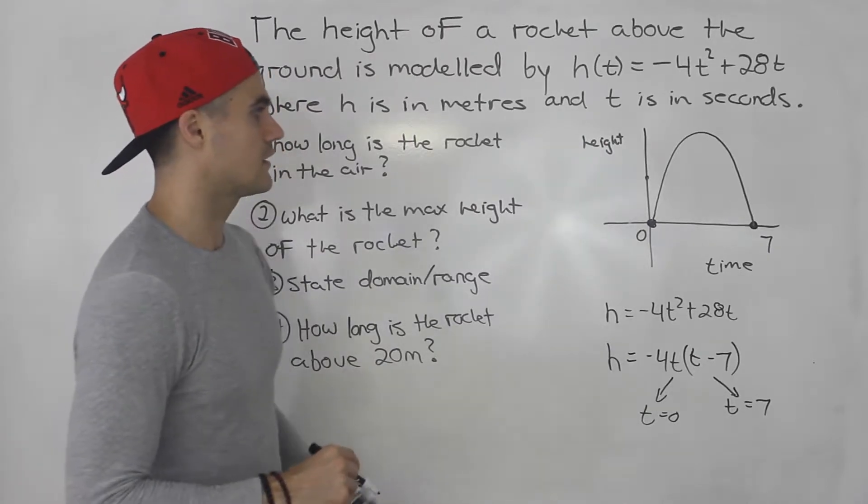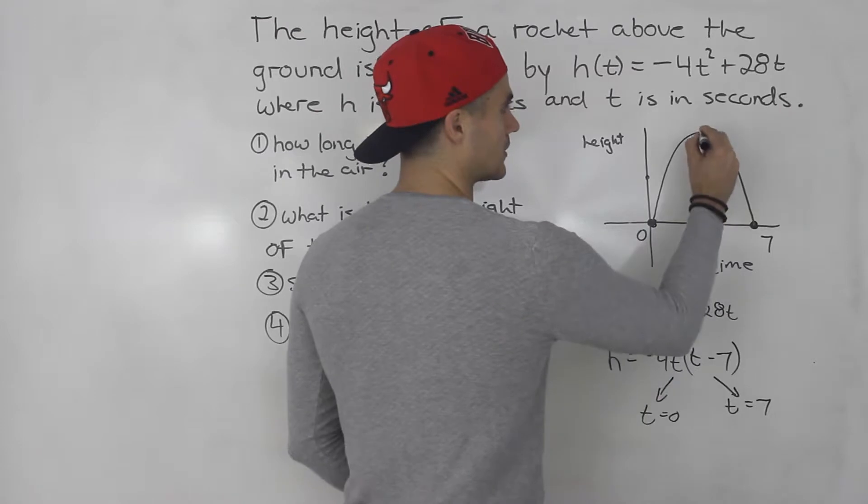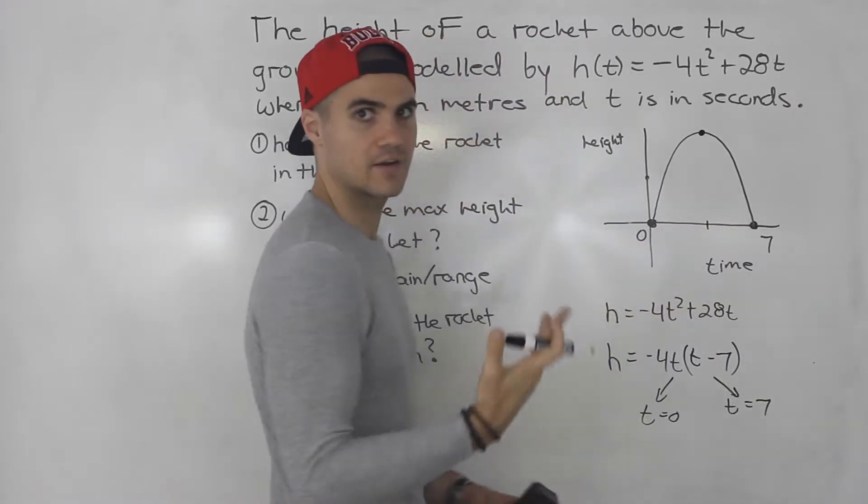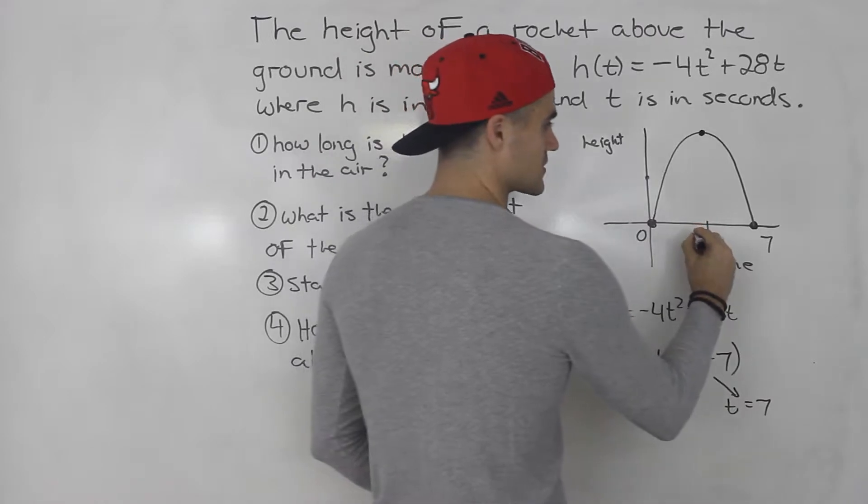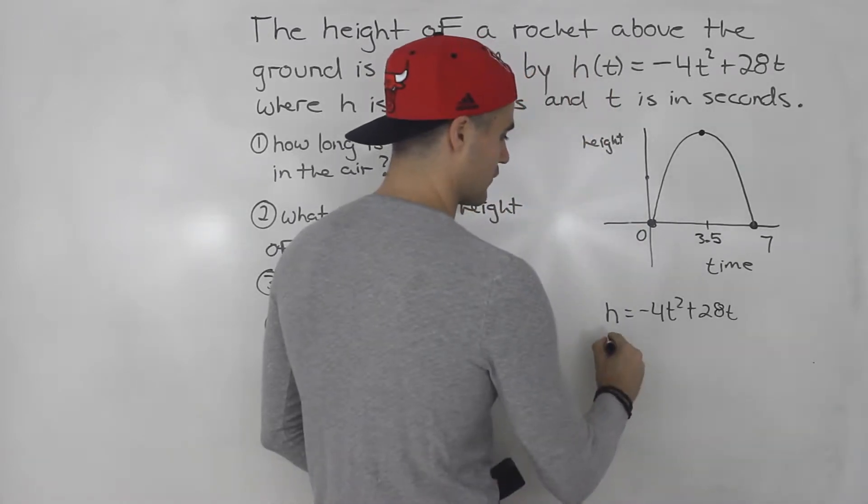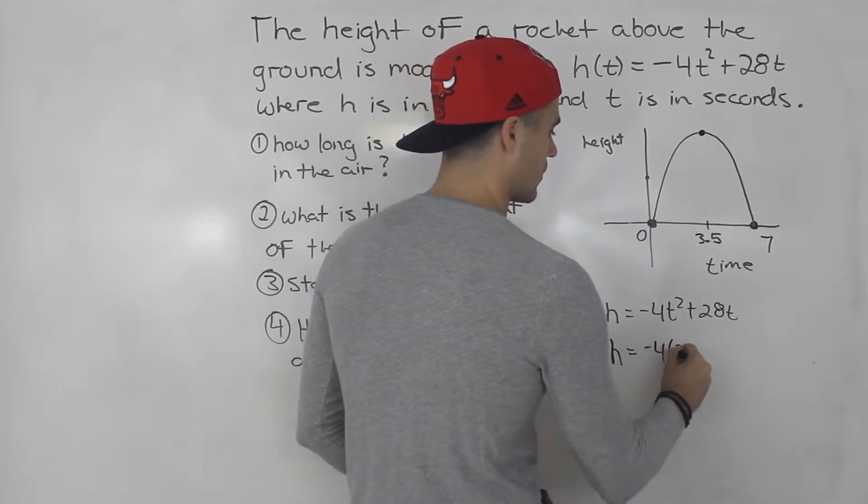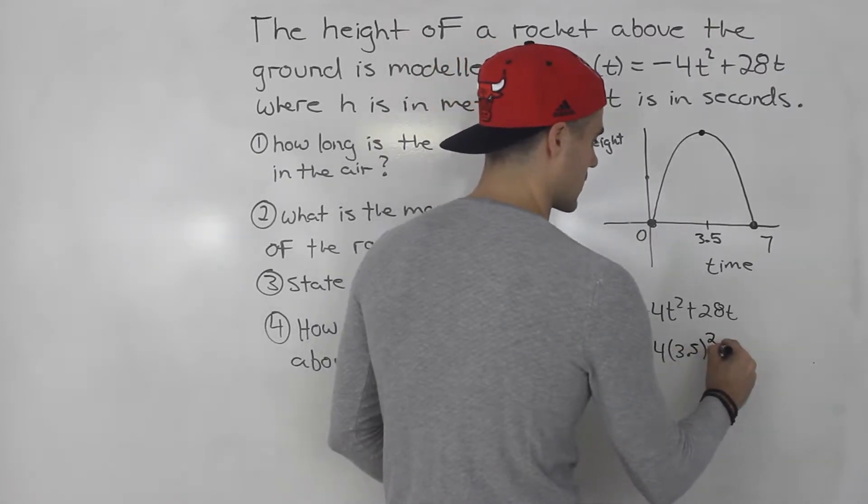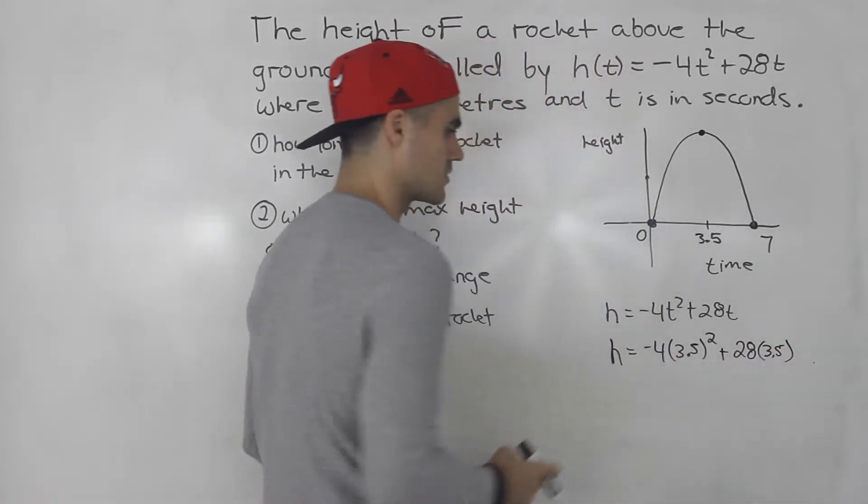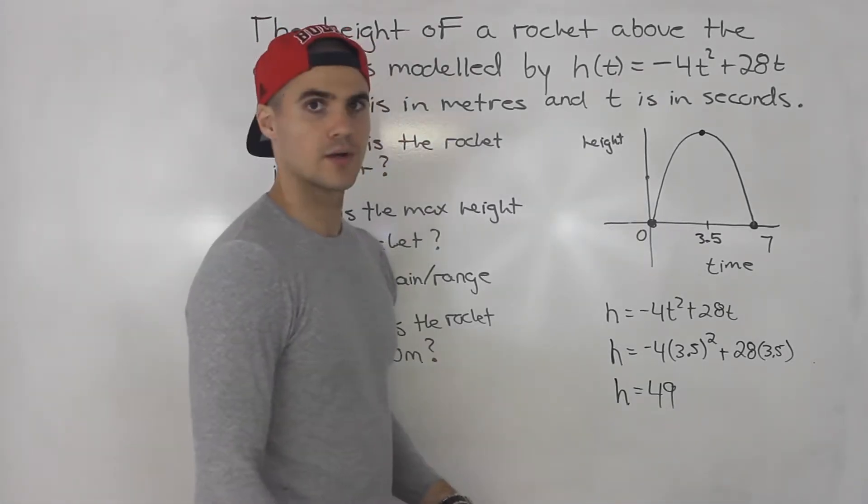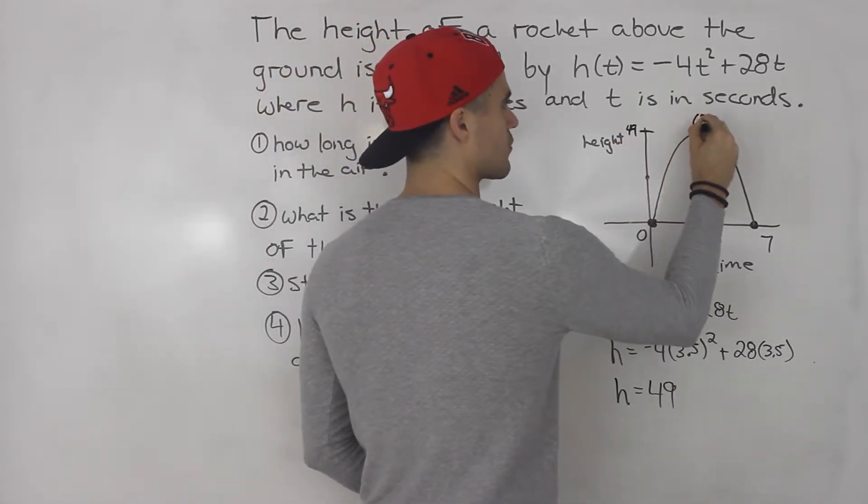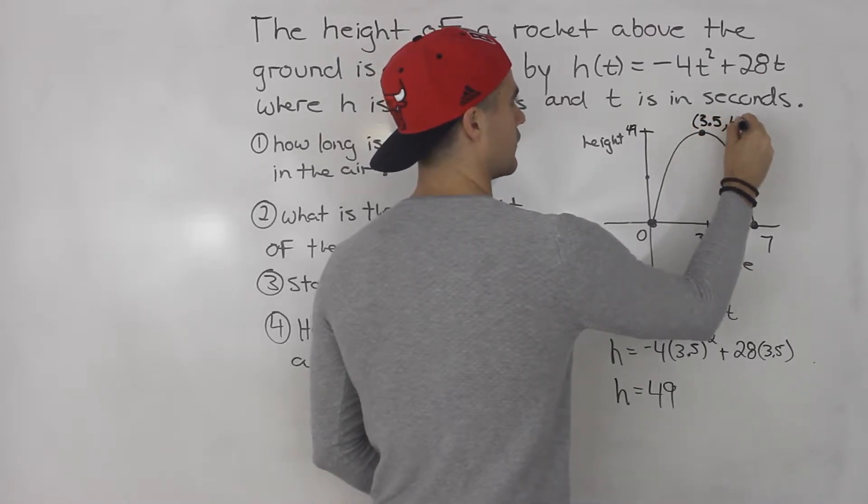So this is how it's looking. Notice that we can calculate what this maximum point is because the maximum point is going to happen halfway in between the intercepts. So 0 + 7 divided by 2 gives us 3.5. And if we want to get that max height, we just have to plug in 3.5 for t. So we'd have -4(3.5)² + 28(3.5). When you do that in your calculator, you end up getting 49 here. So the rocket is reaching a max height of 49. So this point here, 3.5 seconds and 49 meters.